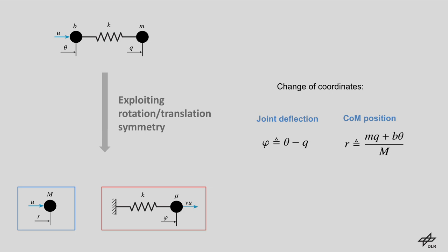I will not go in details here. However, knowing that the elastic system has a rotational or translational symmetry, depending on whether we consider a rotational or linear joint, allowed us to introduce a change of coordinate that decouples the system. Instead of using motor and link position as generalized coordinates, we introduced the joint deflection and center of mass position as new coordinates.